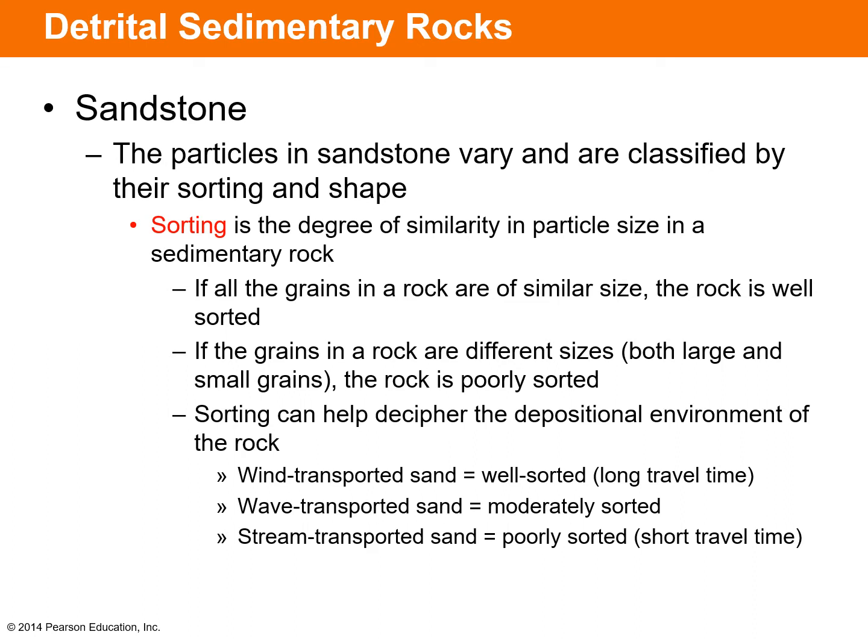Something that creates a well-sorted sedimentary rock is wind transport. Moderately sorted sediment results from wave-transported sand. A poorly sorted or short-travel-time deposit might be stream-transported sand, because a stream's total travel time from when particles were weathered to when they were deposited is shorter on average than wind or wave transportation, which takes longer to lead particles to their ultimate resting place.